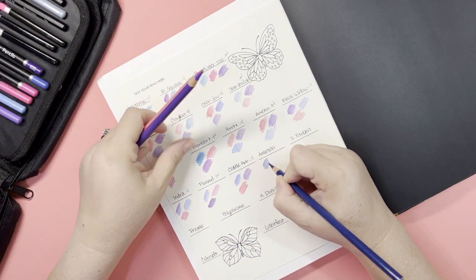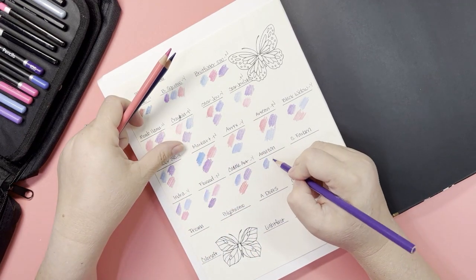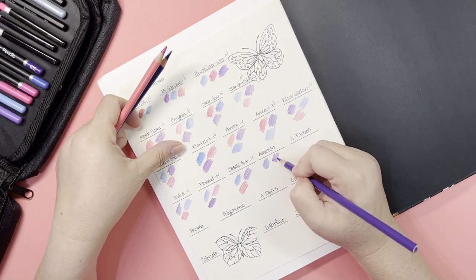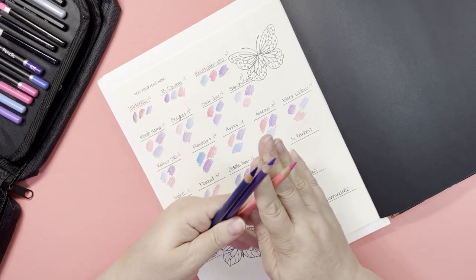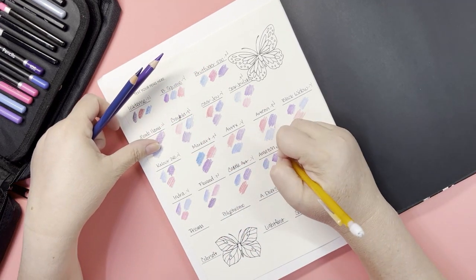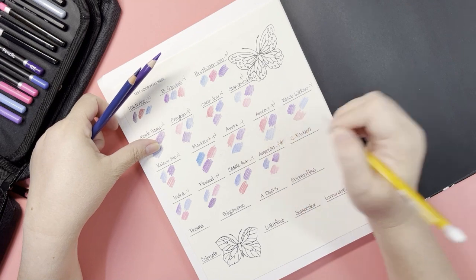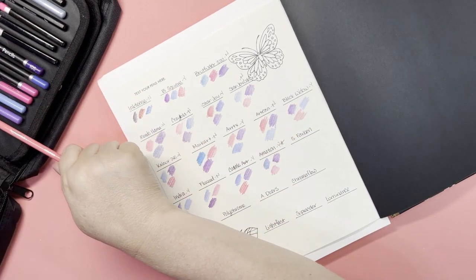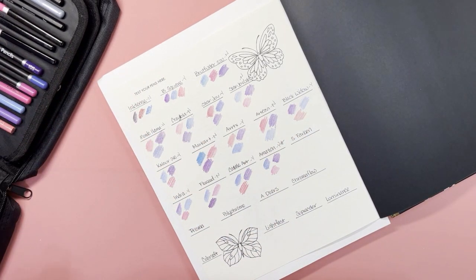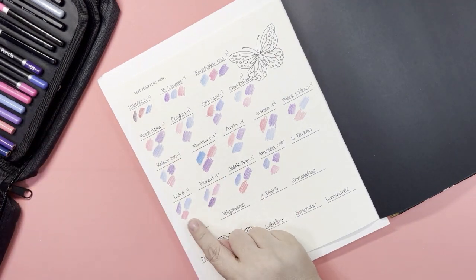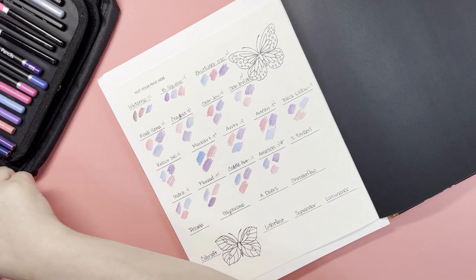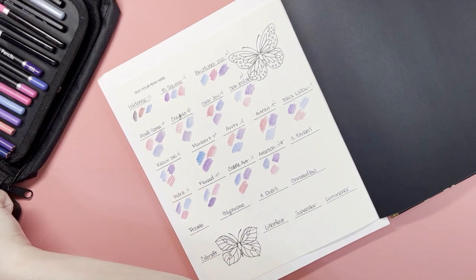All right, my next set, my last of the budget sets, is the Amazon Basics. Oh, I like these. I like these a lot. All right, these I'm putting a star by. These are my favorites so far. Way smooth, soft. Not like creamy buttery like this, but they felt really good.